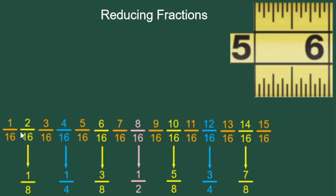The orange fractions cannot be reduced and always have a 16 on the bottom. But the yellow, blue, and pink fractions can be reduced.